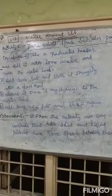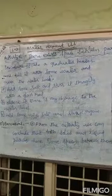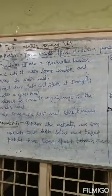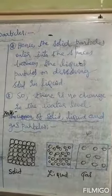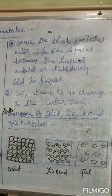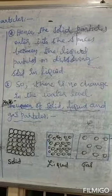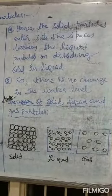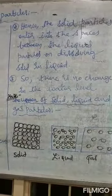Observations: From the activity, we can conclude that both solid and liquid particles have some spaces between them. The solid and liquid particles are having some spaces between them. Hence, the solid particles enter into the spaces between the liquid particles, dissolving the solid in the liquid. For example, addition of sugar to a glass of water, or addition of salt to a glass of water.